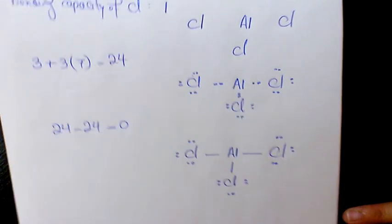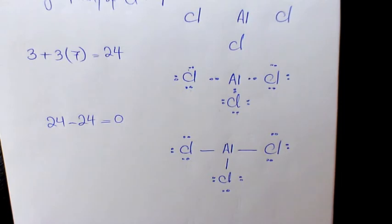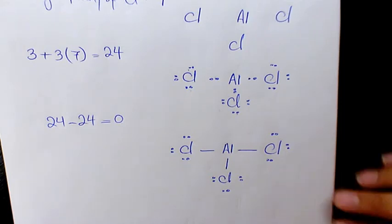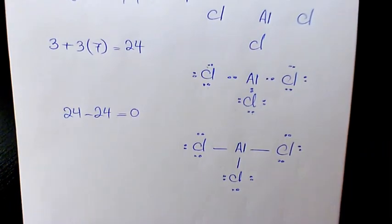And that's going to be the Lewis structure of Aluminium Chloride. I hope you enjoyed this video. Please leave me a comment if you have any questions, and don't forget to subscribe to this channel. You can have access to many other videos regarding chemistry, math, and physics. Thank you for watching, and have a great day.